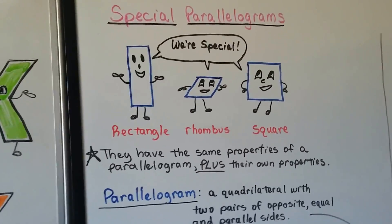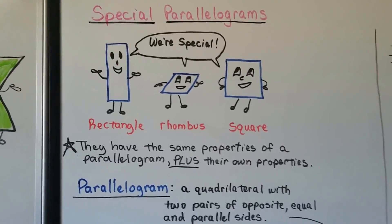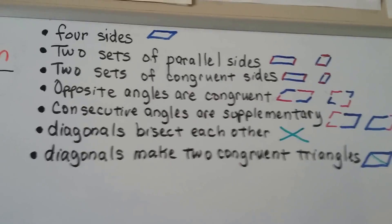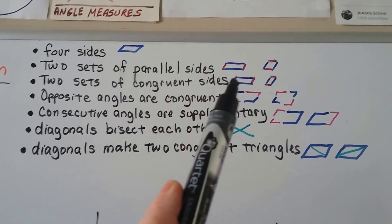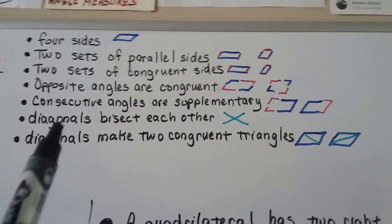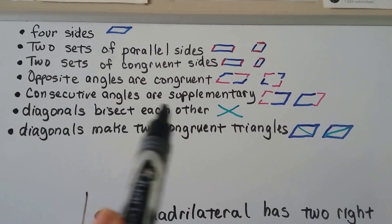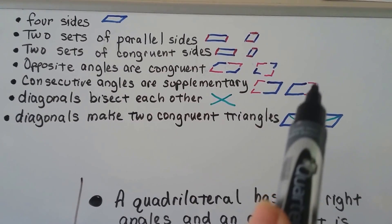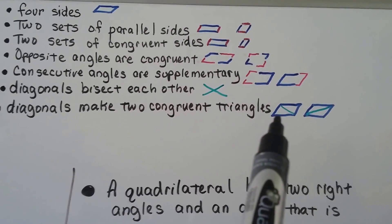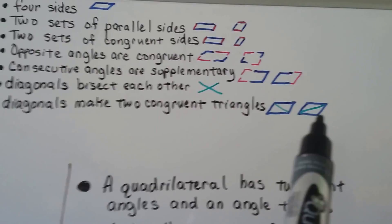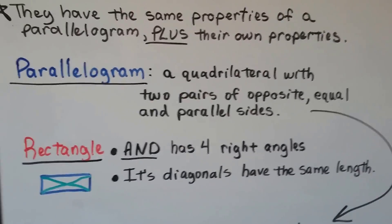So here are the special parallelograms: a rectangle, a rhombus, and a square. They have the same properties of a parallelogram plus their own properties. A parallelogram has four sides, two sets of parallel sides, two sets of congruent sides, opposite angles that are congruent, consecutive angles that are supplementary, and diagonals that make two congruent triangles. A parallelogram is a quadrilateral with two pairs of opposite, equal, and parallel sides.